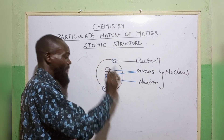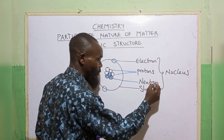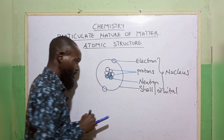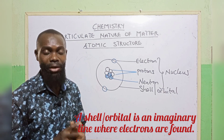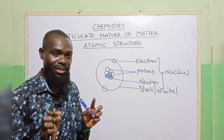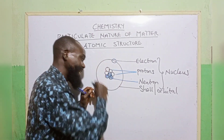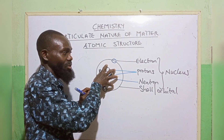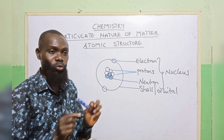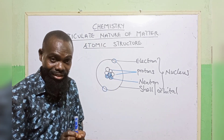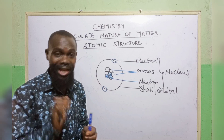Then we have a line where we can find the electron. This line is what we call the shell, or we call it the orbit. What is a shell? A shell, or an orbit, is an imaginary line where electrons are found. They are imaginary lines, meaning that they are not a real ring. What happens is these electrons are found in a circular path surrounding the inner nuclear charge, so they are found in a circular part. A shell, or an orbit, is an imaginary line where electrons are found.